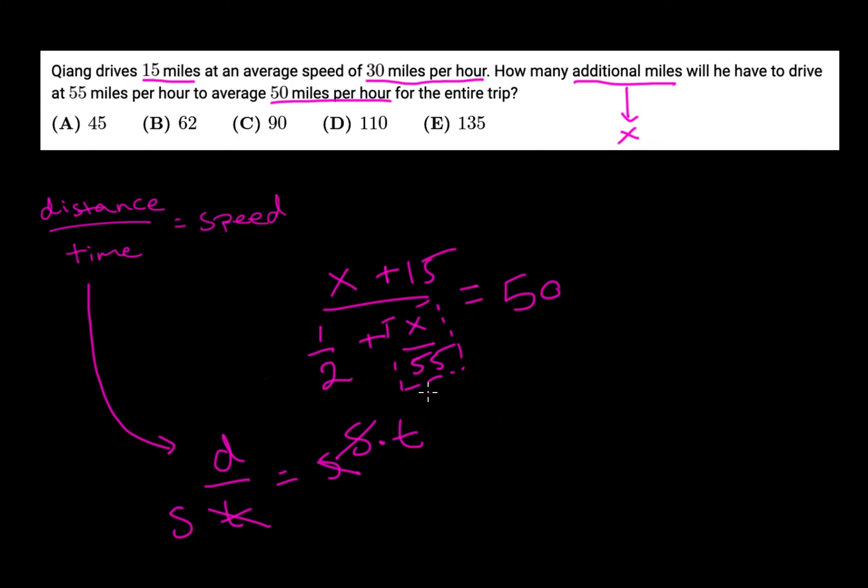Now we can solve our equation. I'm going to get rid of this fraction first. Multiply both sides by 1 half plus x over 55, which gets 25 plus 50x by 55, or 10x by 11. Subtract 10x by 11 from both sides, you get 1 eleventh x equals 10, meaning that x equals 110.